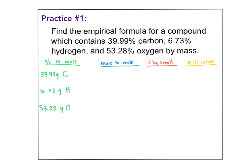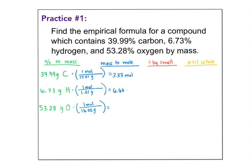That's step one, percent to mass. Then mass to mole. I'm going to use my mole island and go from grams of carbon to moles of carbon using the molar mass — grams on the bottom, moles on top. I do the same for all of these: 1.01 grams per mole for hydrogen, and 16.00 grams per mole for oxygen. When I crunch the numbers, I get 3.33 moles of carbon, 6.66 moles of hydrogen, and 3.33 moles of oxygen.